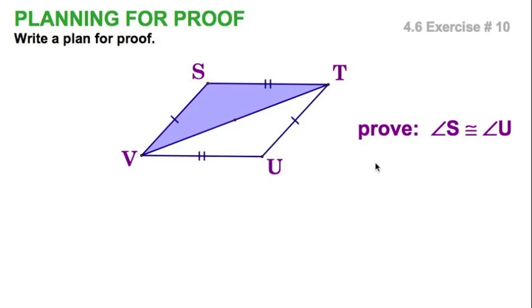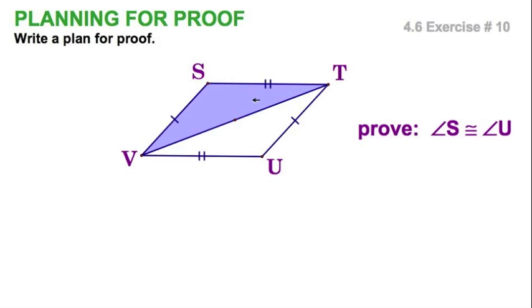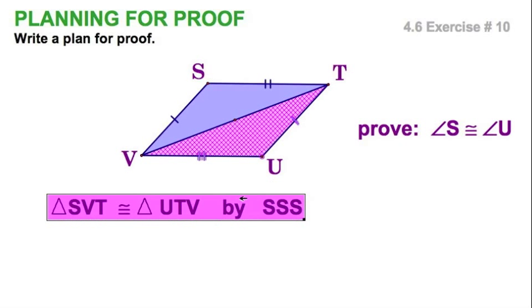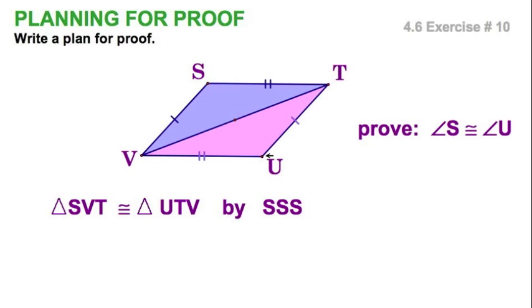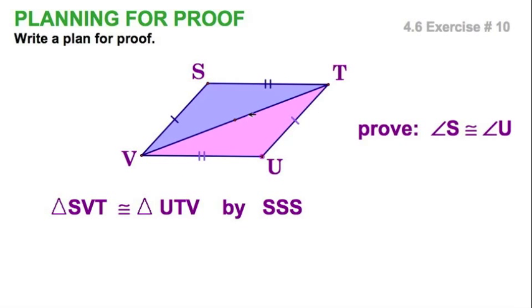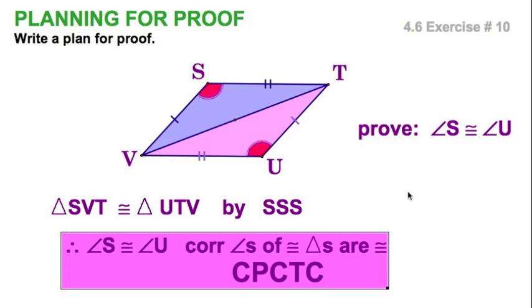Let's write a plan for proof. We want to prove that angle S is congruent to angle U, and clearly we're going to do it with a pair of triangles. If I can make this triangle congruent to its rotation, then I'm there. I can see right away these two triangles are congruent by side-side-side. I see the two tick marks, and VT is congruent to itself by the reflexive property — side, side, side. This side is common to both triangles. Once those triangles are congruent, then all their corresponding parts are congruent.